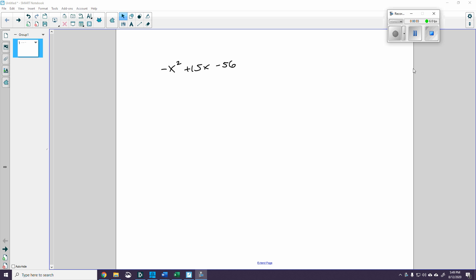All right, let's see what I can do with this. So this is the problem, and I really don't like it when my a is negative. So what I'm going to do is I'm going to put the negative sign out there, and I'm going to make it x squared minus 15x plus 56.